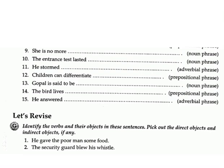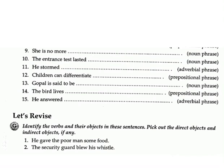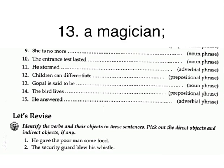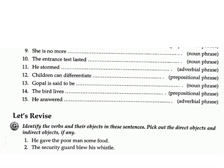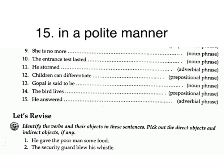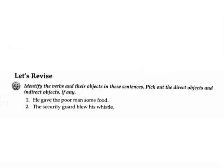12. Children can differentiate ___. (prepositional phrase) Answer: right from wrong. 13. Gopal is said to be ___. (prepositional phrase) Answer: a magician. 14. The bird lives ___. (prepositional phrase) Answer: in that tree. 15. He answered ___. (adverbial phrase) Answer: in a polite manner.